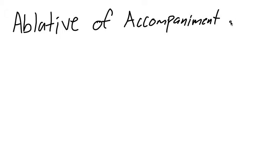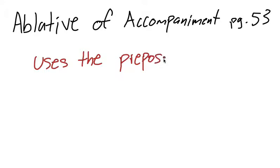You can find this in your book on page 53. This is a pretty simple concept. Basically, the ablative of accompaniment uses the preposition cum meaning with, and you use the ablative of accompaniment when going somewhere with someone.